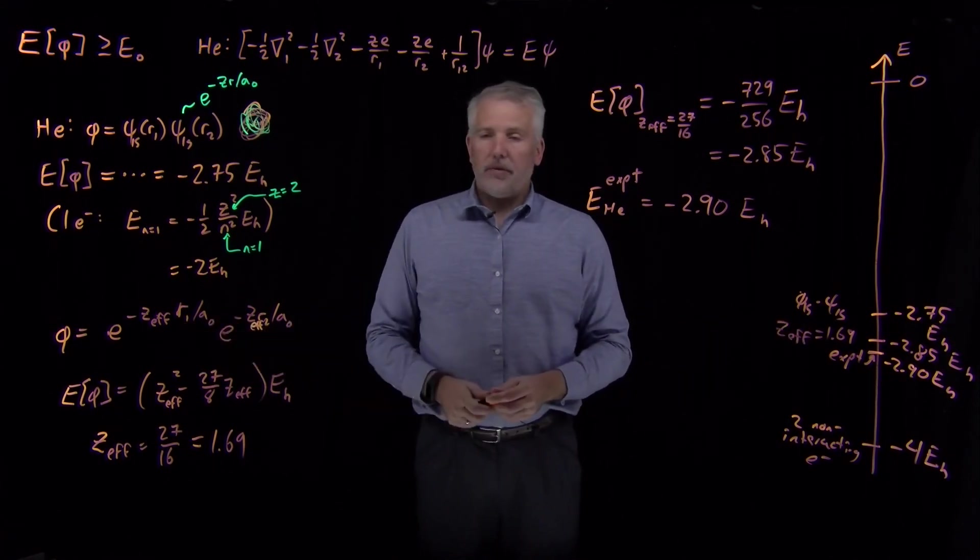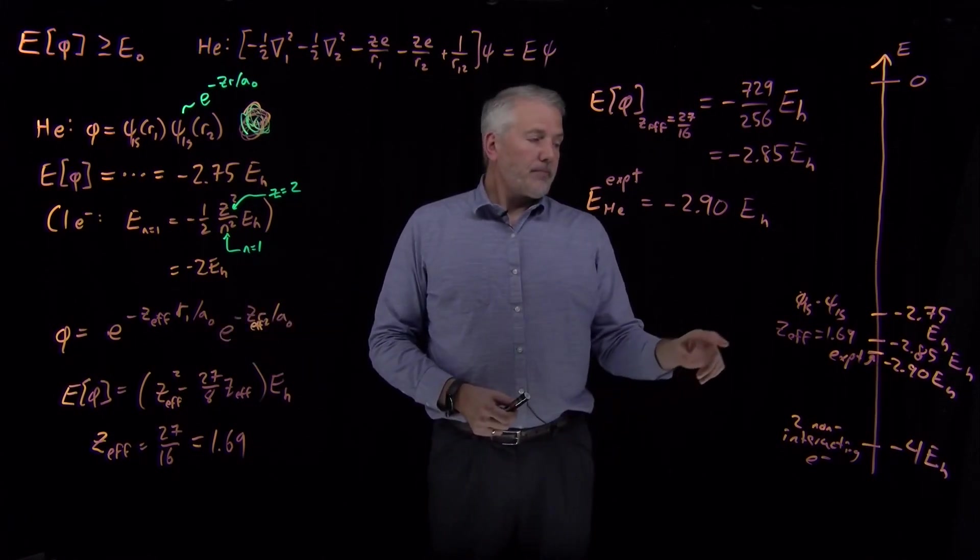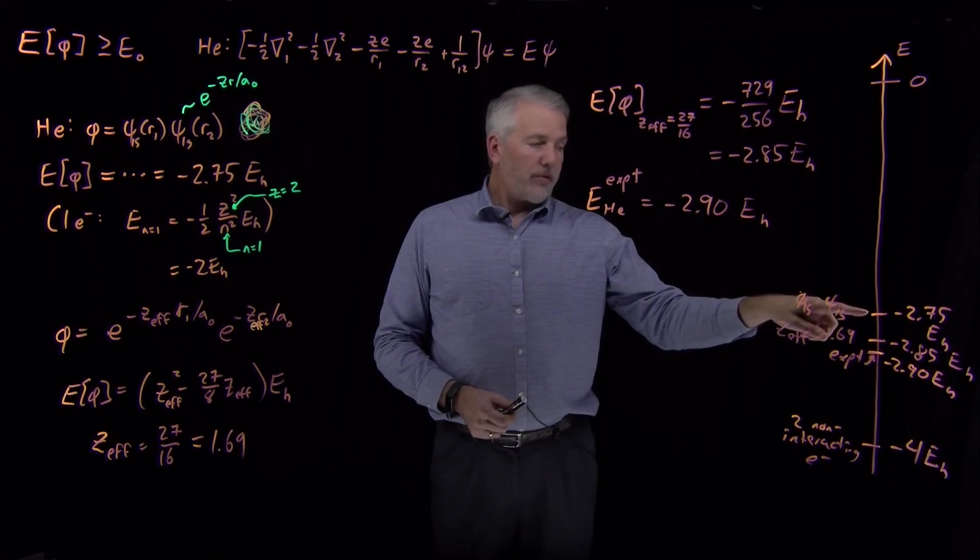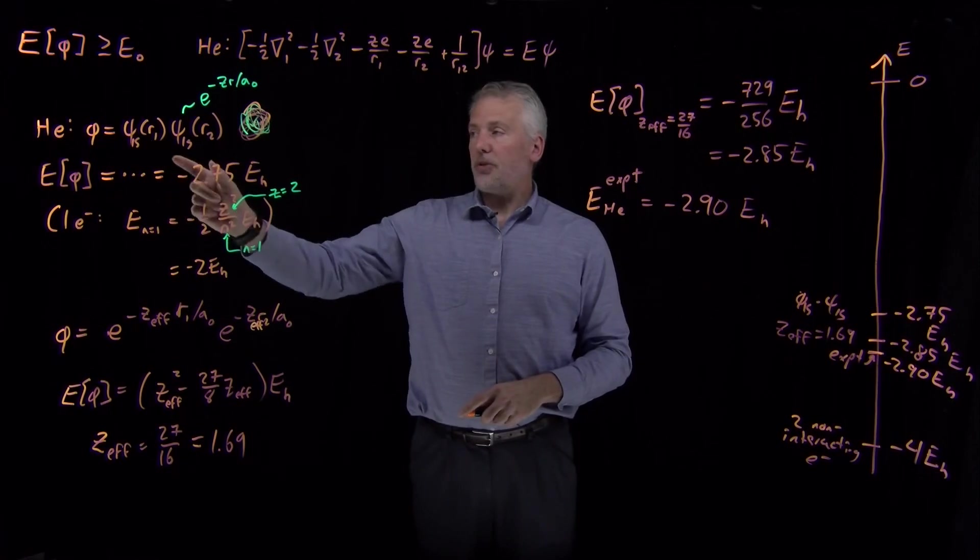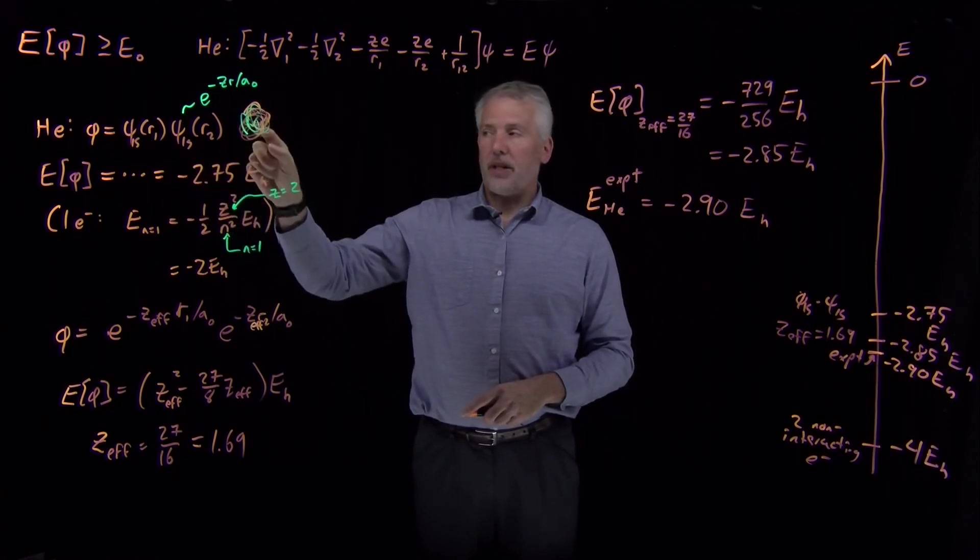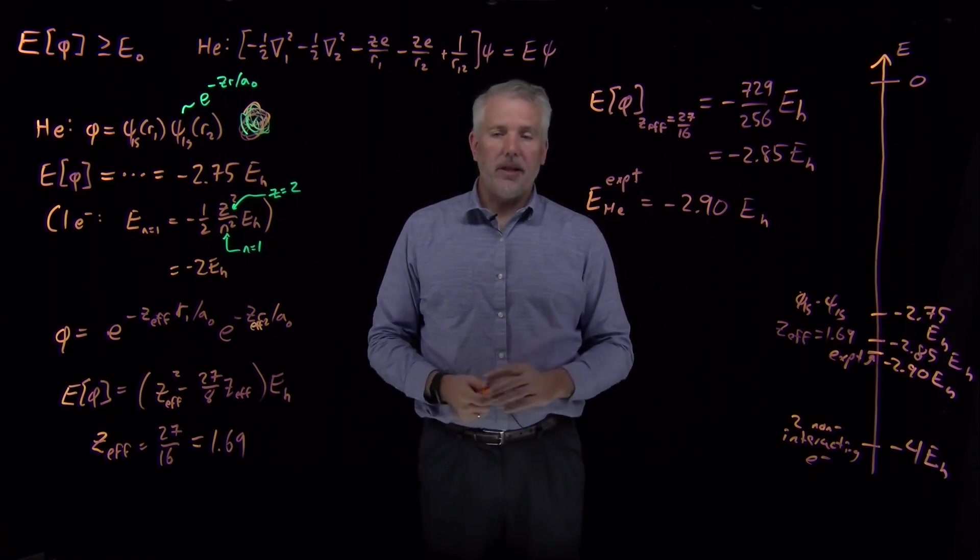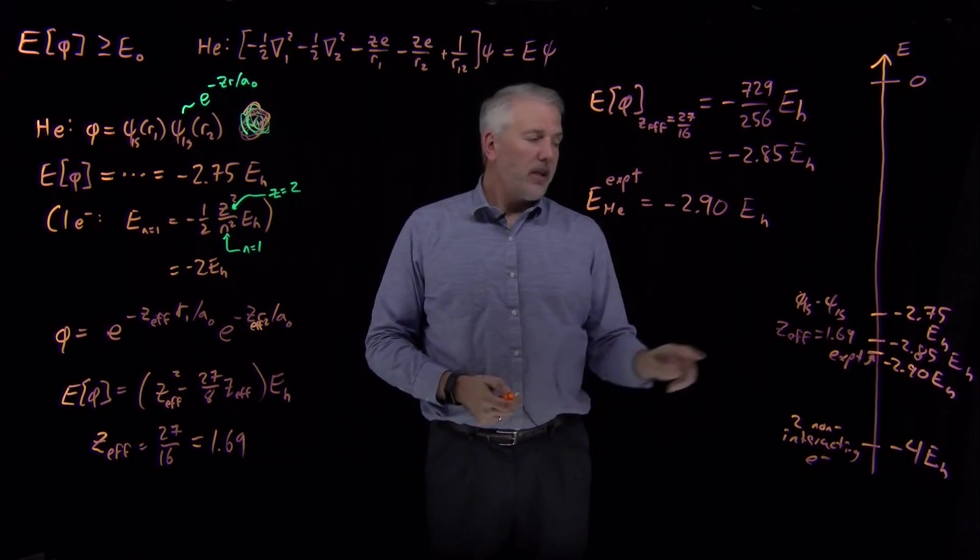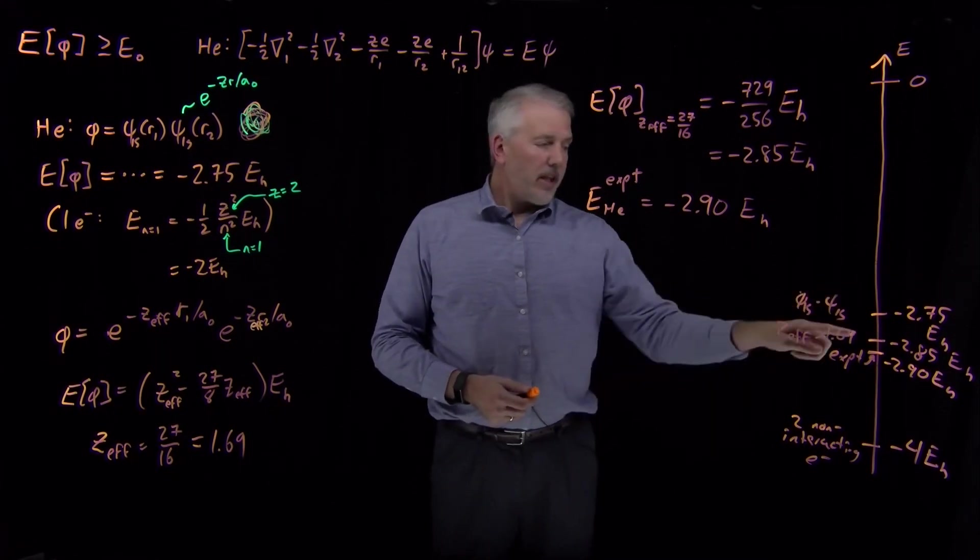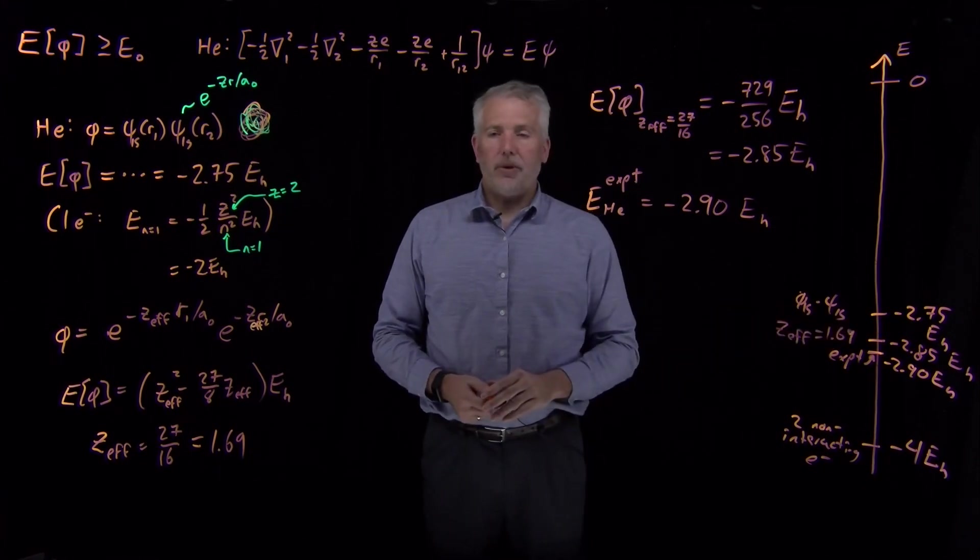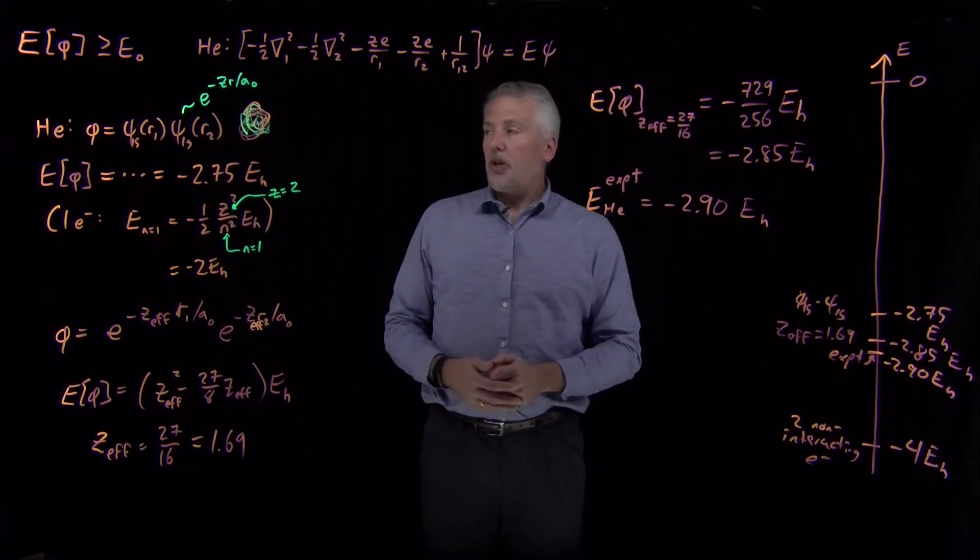Also notice that we've been able to do pretty good even with what turns out to be kind of an approximate version of the wave function. We're able to recover roughly 95% of the true experimental energy even with this guess where I take two s orbitals surrounding a z equals two nucleus. If I use the power of the variational approach and allow the nuclear charge to be a variable instead of a constant, then I can do a little better and I can get to 98% of the correct experimental energy.